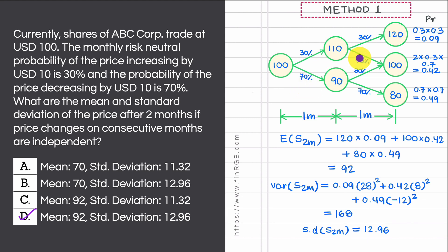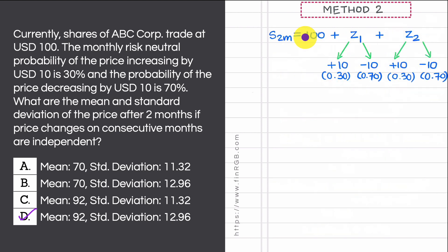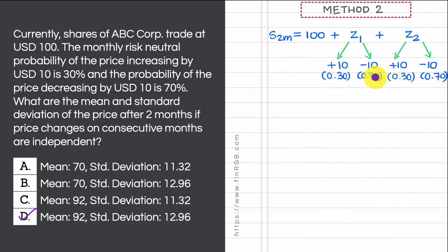In Method 2, we treat S2m as equal to the starting value of 100 plus the random change in the first month Z1, plus the random change in the second month Z2: S2m = 100 + Z1 + Z2. Both Z1 and Z2 can take the value +10 with probability 0.3 or −10 with probability 0.7.